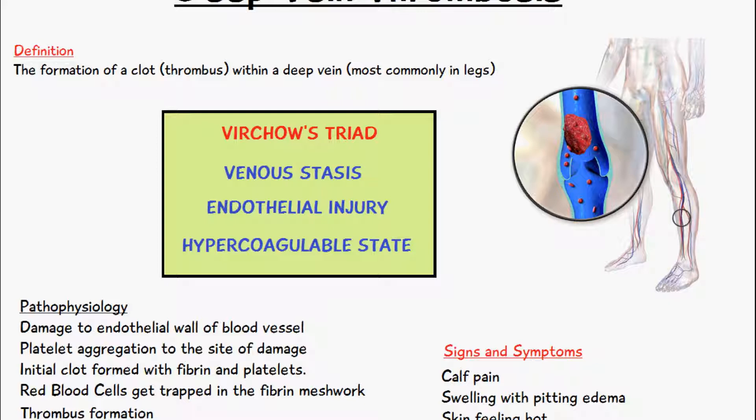The hypercoagulable state can also happen in cases of malignancy, where some kind of tumor is causing the hypercoagulability, or it can occur in cases of disorders of hypercoagulation — and those can be either inherited disorders or acquired disorders.